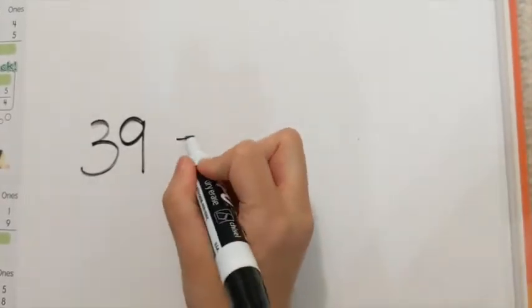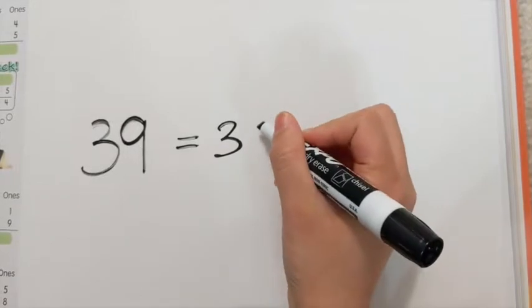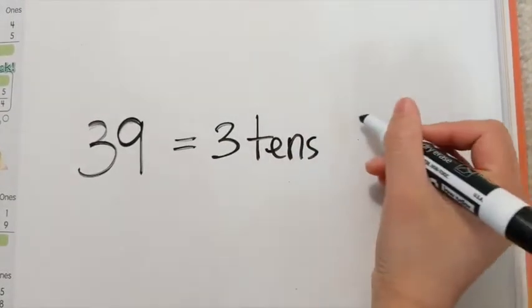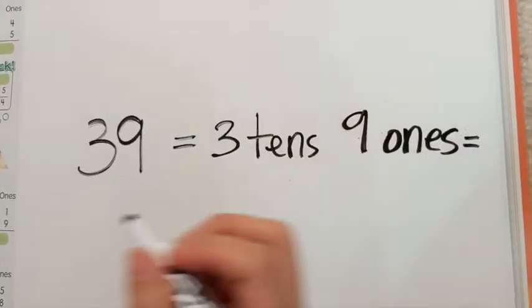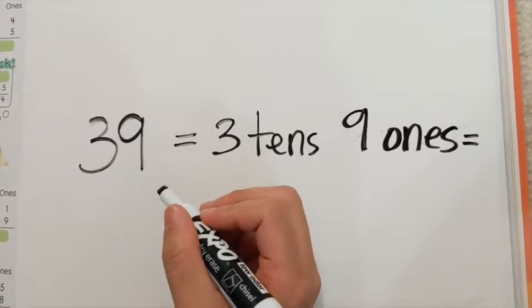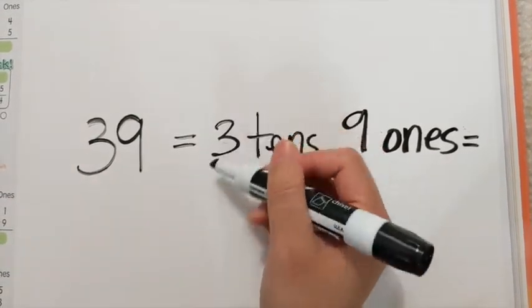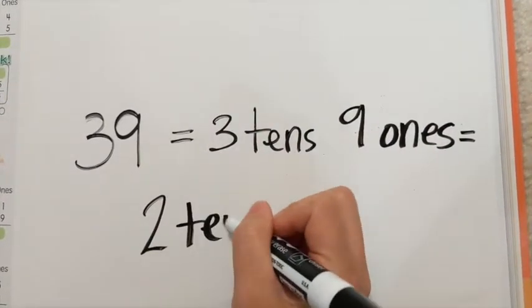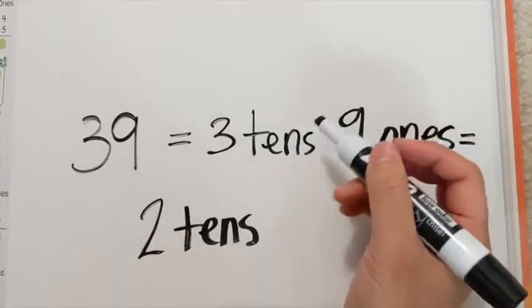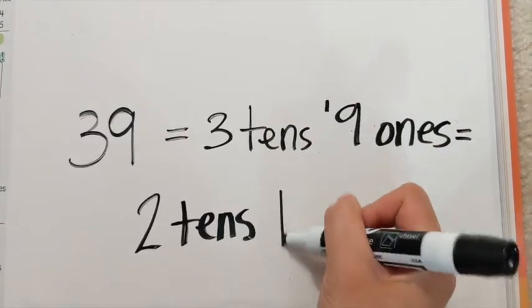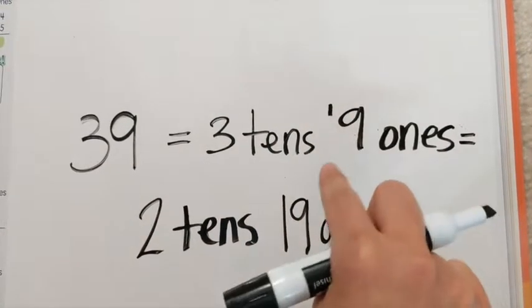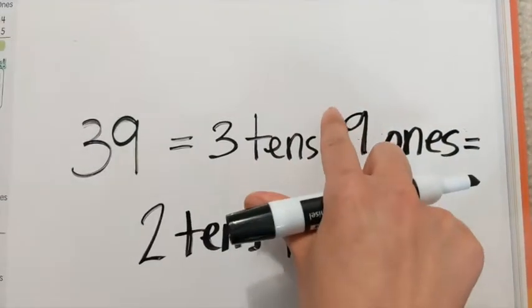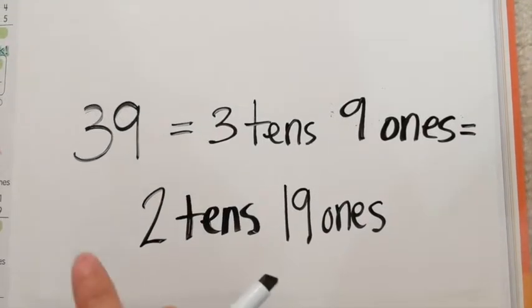So let's practice. Take thirty-nine, for example. Say that in tens and ones — you should say three tens and nine ones. Now we're going to regroup. Three tens and nine ones, if you regroup, move one of these ten rods over — you have two tens. And what would happen if you moved one of the rods over here? It would become nineteen ones with two tens, because the ten that we regrouped plus nine equals nineteen. So thirty-nine is actually the same exact thing as two tens and nineteen ones.